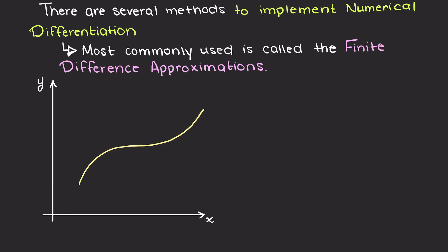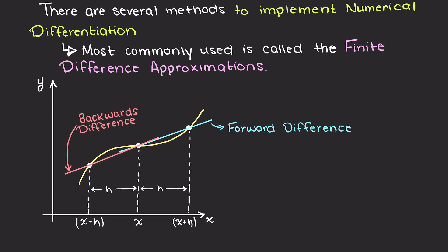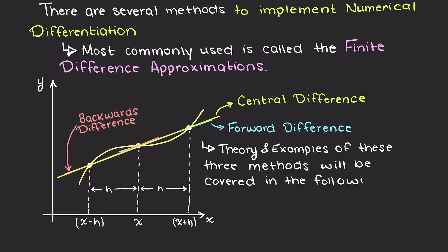Although we'll go into more details in the coming videos, essentially they discretize the continuous domain into a set of discrete data points and replace derivatives with finite difference approximations. This involves approximating the derivative at a point by considering function values of nearby points. Common types include forward, backward, and central difference methods.